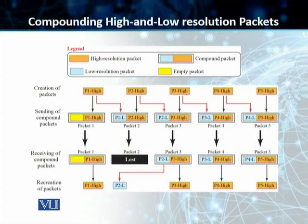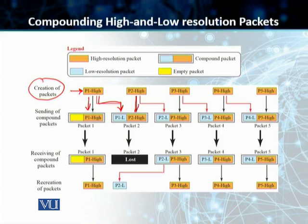On this slide, we can see the creation of the packet process. We have packet 1 high, which goes into the first packet. A low resolution version of the same packet goes in packet number 2. Packet 2 high goes in packet 2 itself, and then a low resolution version goes in packet number 3, and so on.